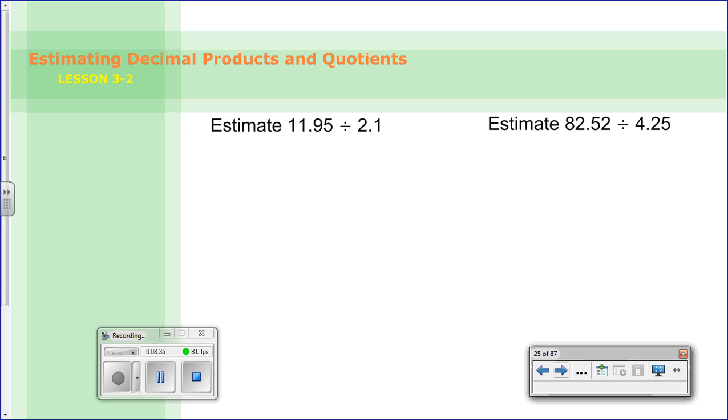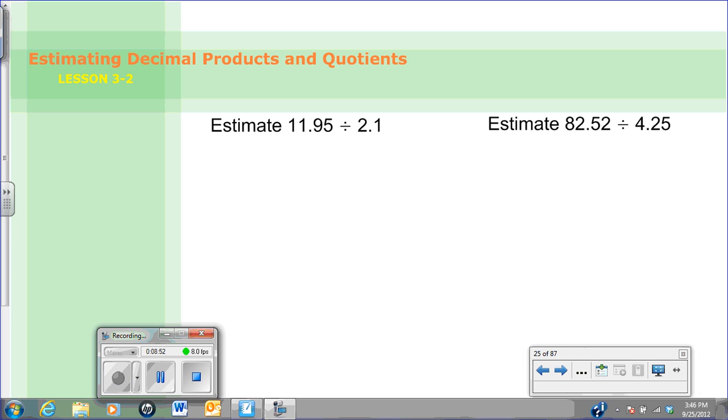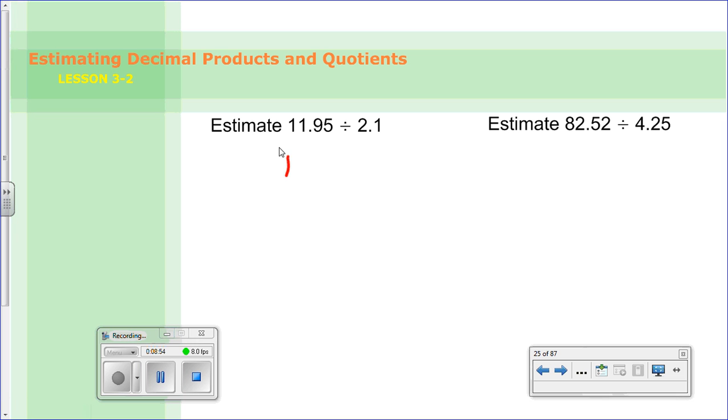Alright, so now we have these two problems. Again, I want you to estimate using compatible numbers. And when you're all done, come back and check them. So go ahead and do the first one first. And then go ahead and do the second one. Alright, so for this first one, I'd round 11.95 to 12. And then 2.1, I'd keep as 2. So our answer here, 12 divided by 2 is 6. So it's about 6.